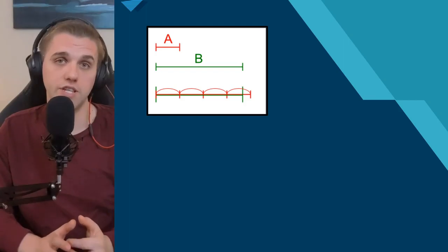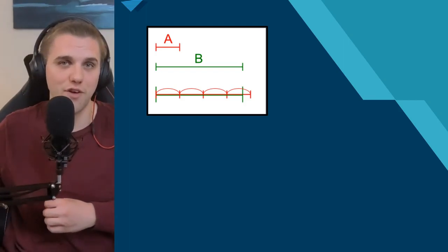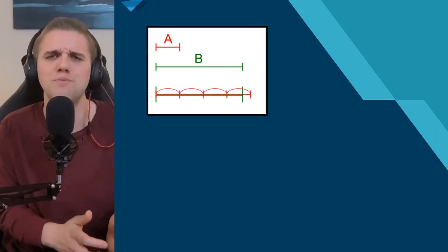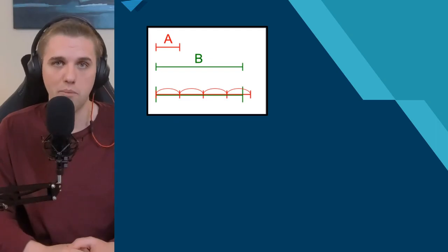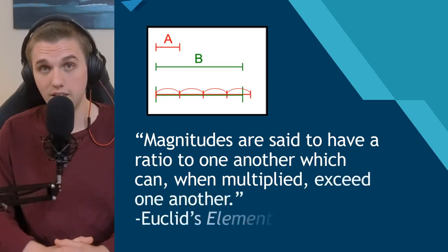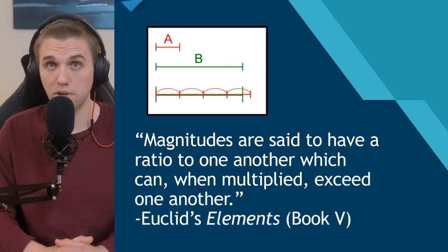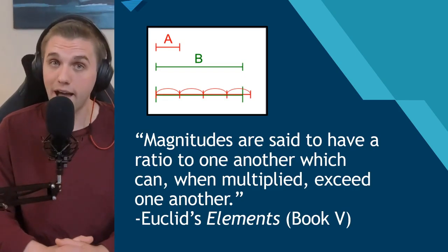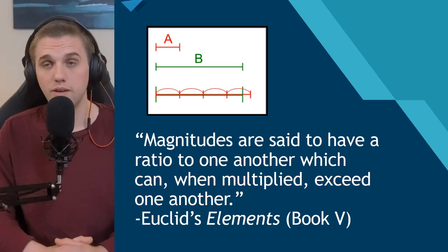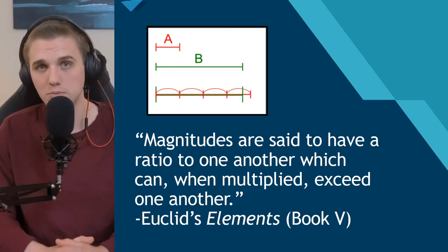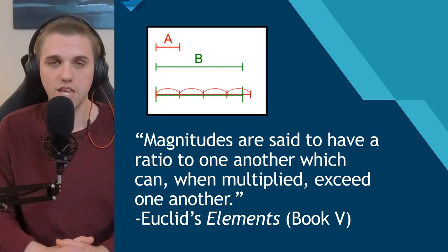Another property the real number line has is the Archimedean property. A lot of people shrug this off as obvious, almost like an axiom we should just assume is true. But the Archimedean property is really important to understand conceptually. Euclid said it best: magnitudes are said to have a ratio to one another which can, when multiplied, exceed one another. Basically, the Archimedean property says you can take any quantity A and measure quantity B — you don't need to measure it perfectly, but you can get a little bit over.